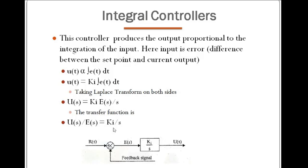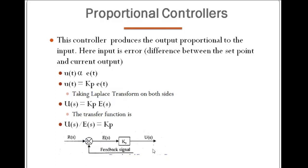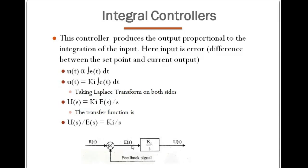So the transfer function becomes ki divided by s. In place of the proportional controller which had only kp, here we have ki over s because of the integral action. The proportional controller considers only the present error — what is the error right now — and takes control action. But the integral controller does not consider only the present; it takes the entire past history of the error.